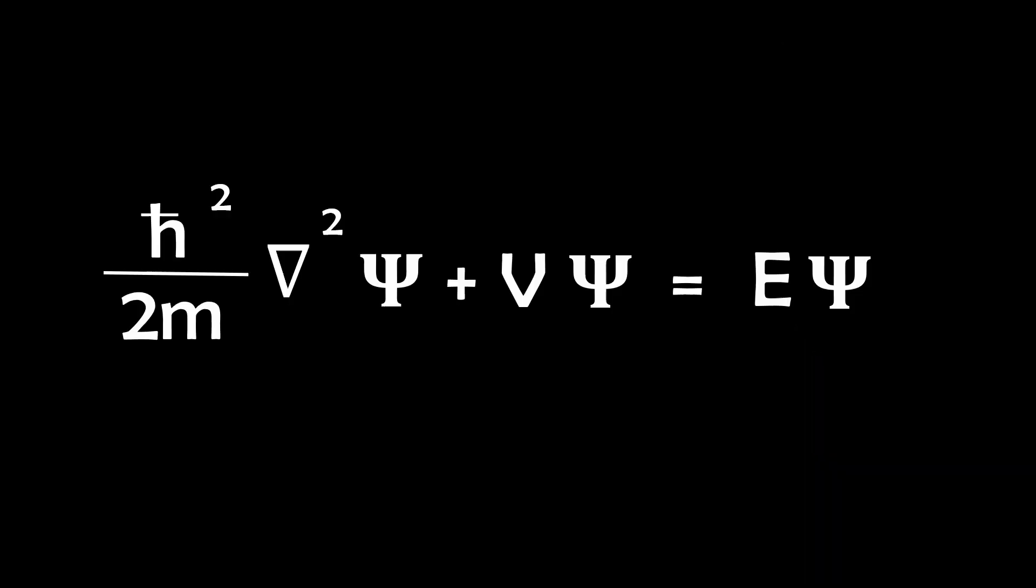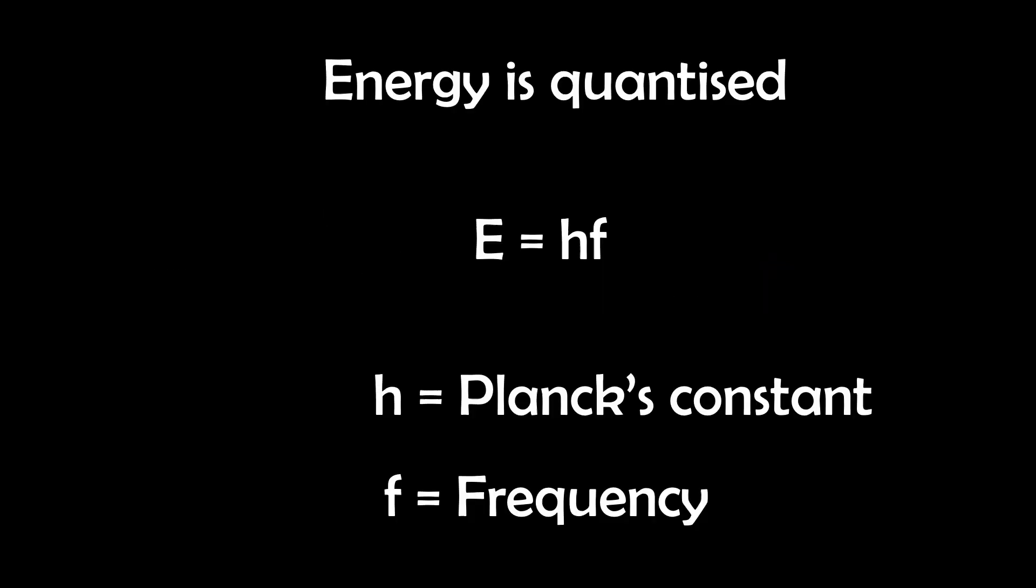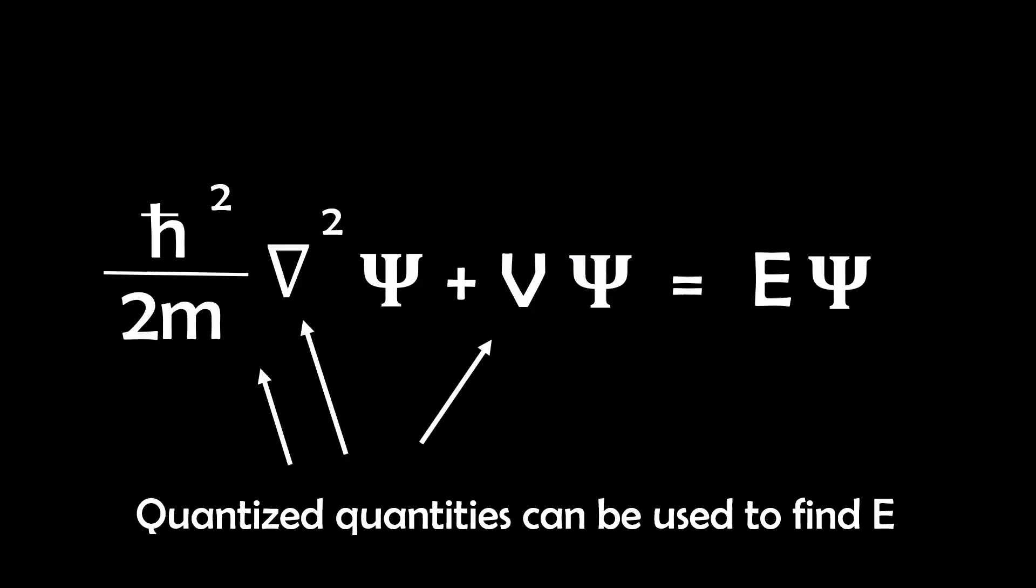Now let's talk about the E in the equation. This represents the energy of the electron. Unlike the continuous energy spectrum we experience daily, quantum mechanics energy is quantized into specific levels. Remember Einstein's equation E equals HF where H is Planck's constant and F is frequency. We can use a bunch of quantized quantities from the Schrödinger equation to find the energy.